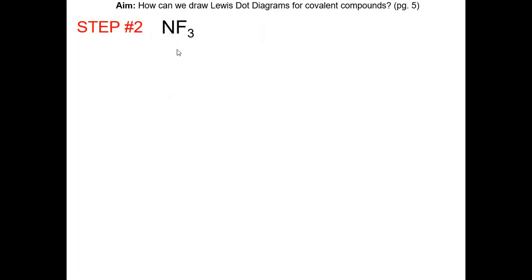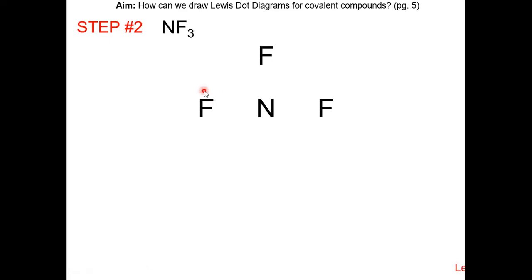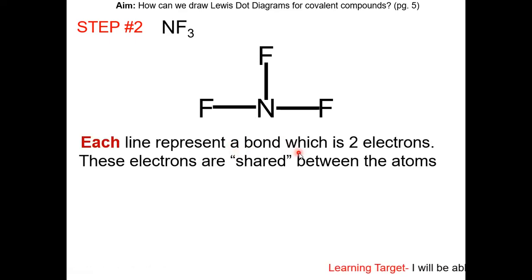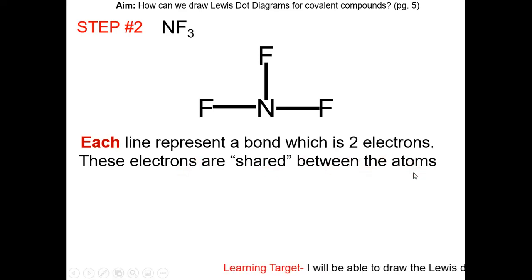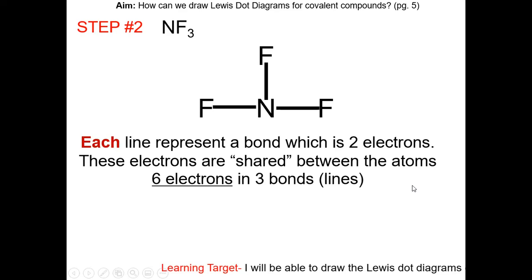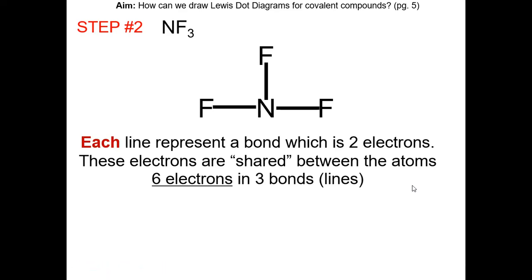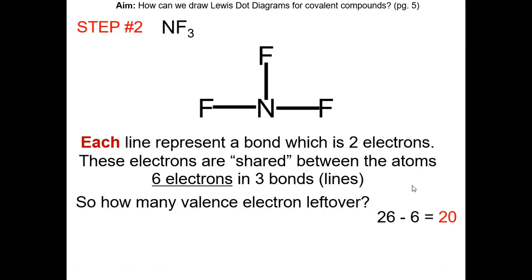In step two, determine which element goes in the middle. Since nitrogen has the smallest subscript and forms more bonds than fluorine, it goes in the middle. Draw the fluorines around nitrogen, then draw a line connecting each fluorine to the central atom. Each line represents a bond, which is two electrons shared between the atoms. We used three lines, or six electrons. We started with 26 electrons total, so 26 minus 6 leaves 20 electrons remaining.